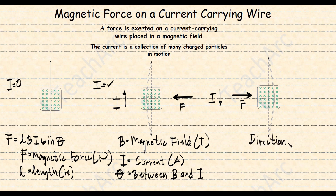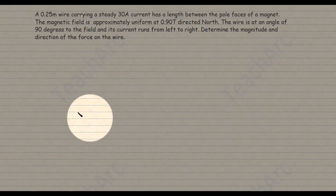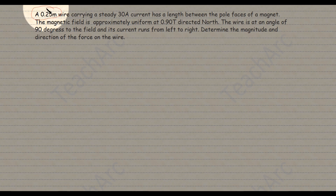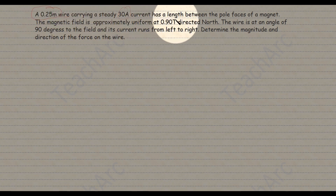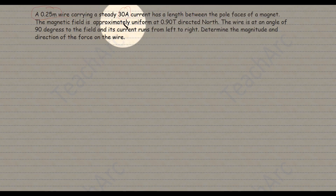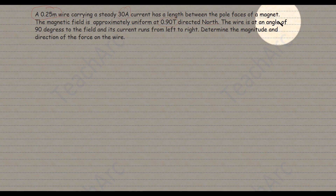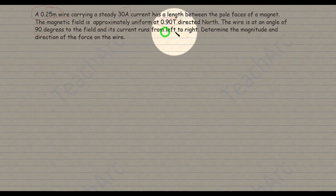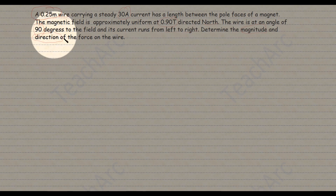The direction of the magnetic force will be identified using the right-hand rule. As an example, a 0.25 meter wire carrying a steady 30 ampere current has a length between the pole faces of a magnet. The magnetic field is approximately uniform at 0.90 tesla directed north. The wire is at an angle of 90 degrees to the field and its current runs from left to right. Determine the magnitude and direction of the force on the wire.